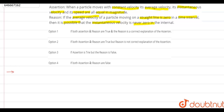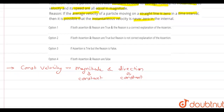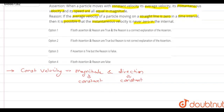First, let's talk about the assertion statement. It says a particle moves with a constant velocity. So what is constant velocity? Constant velocity means a particle has a constant magnitude and its direction is also constant — only then can a particle have a constant velocity.